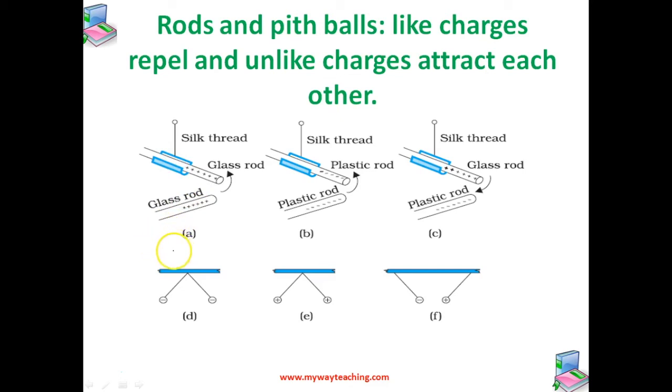However, the glass rod and wool, this glass rod and the wool which is used to rub it, they attracted each other. Similarly, two plastic rods, you can see in this second figure, when we take two plastic rods rubbed with the cat's fur, they attracted the fur. Again, in this case also they attracted the fur which is used for rubbing but these plastic rods, they repel each other.